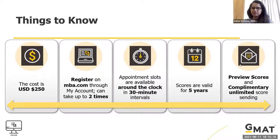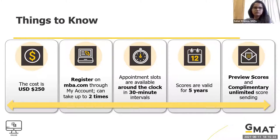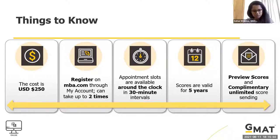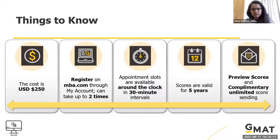For the enhanced online GMAT, score sending is complementary and unlimited. For the test center GMAT you have five free score sends; beyond that there is a $35 fee per program to send your official score. For the enhanced online version there are no charges — you can send your score to as many schools and programs as you'd like with no upper limit. Make use of this opportunity.